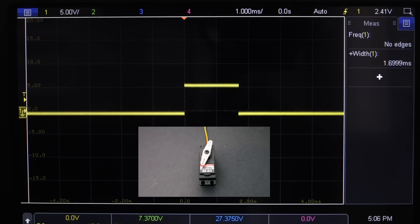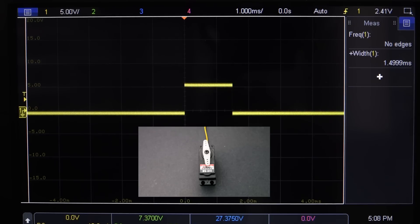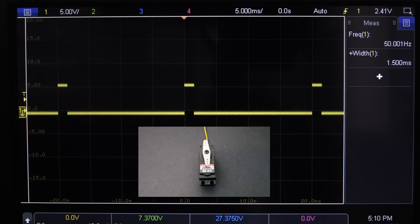If we change the pulse width from 1.5 ms to 2 ms, the servo rotates clockwise. And if we change the pulse width from 1.5 ms to 1 ms, the servo rotates counterclockwise. You can move a little further than those extremes, but the standard signal is expected to be 1 to 2 ms wide.